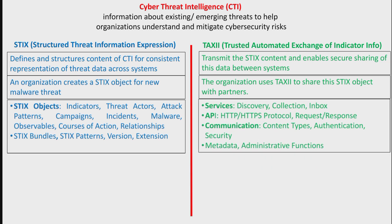In TAXII, there are parameters related to services, API, and communications. The service architecture includes a discovery service, collection service, and inbox service for threat data. An API communicates STIX objects to other systems using HTTP and HTTPS — HTTPS uses port 443 and HTTP uses port 80. Additional parameters include content type, authentication, security information, and other metadata associated with the TAXII protocol.